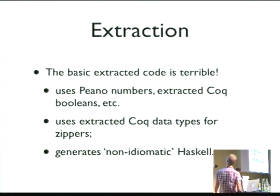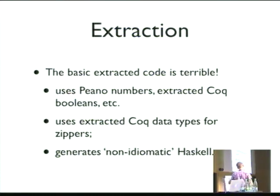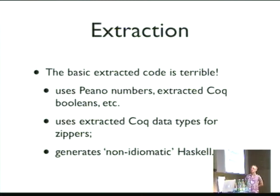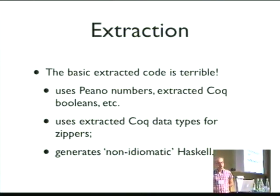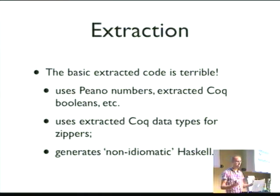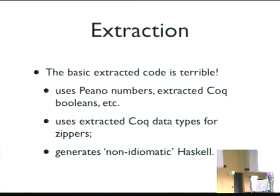Then there's extraction. If you do basic extraction you get something like what I showed for the list example, and it's pretty terrible. It uses Peano numbers instead of machine integers. It uses extracted Coq booleans instead of Haskell Bool. It extracts all your data types, generating its own versions of all the zipper data types, whereas the rest of the XMonad library expects those data types to have certain shapes and constructors. So it won't work if you just use the extracted code — and more generally, it generates pretty non-idiomatic Haskell.